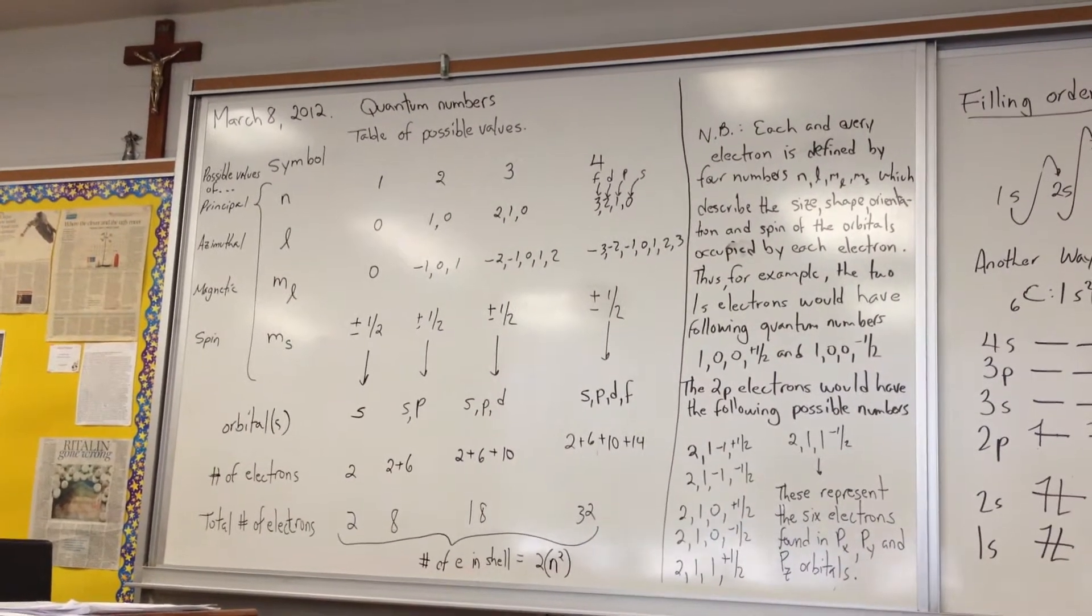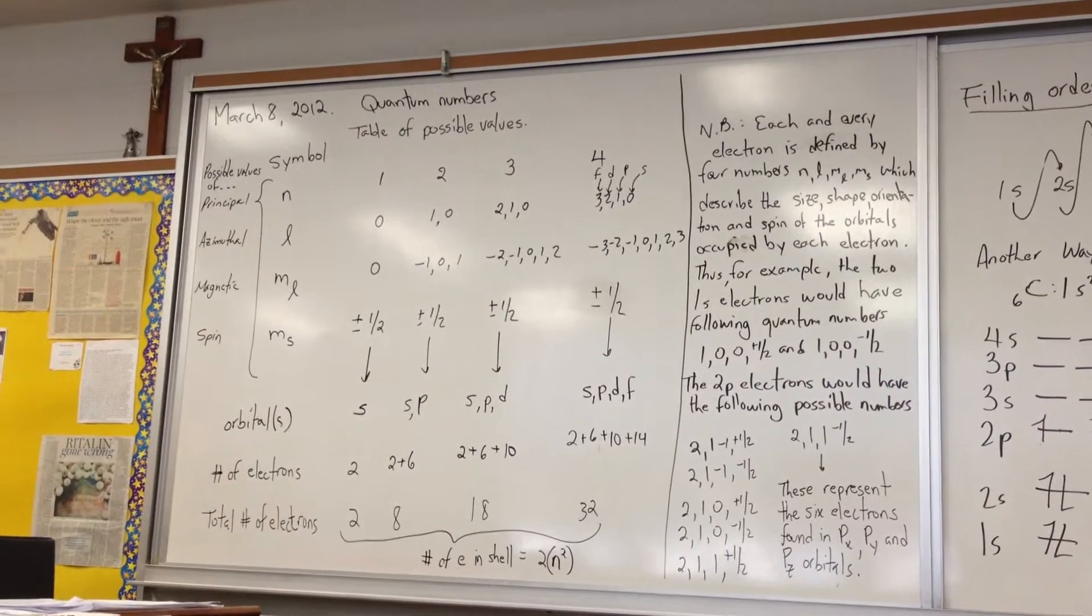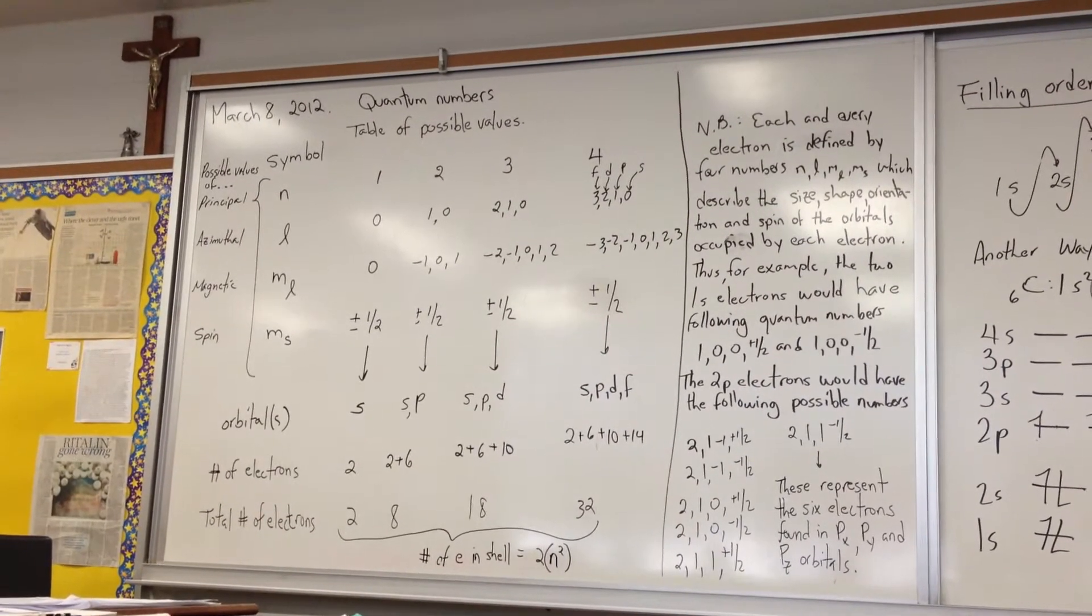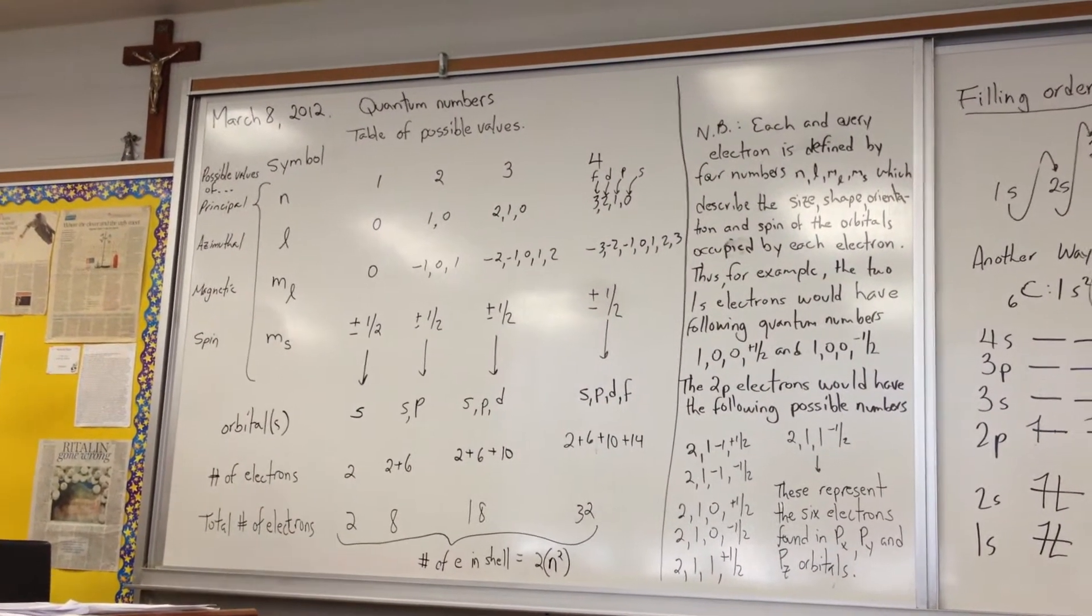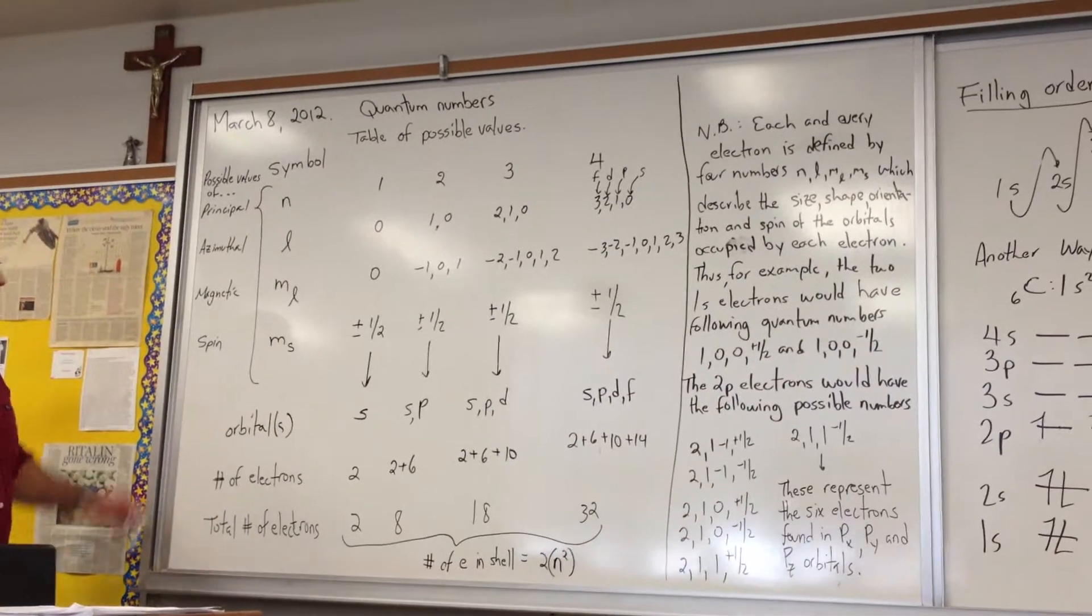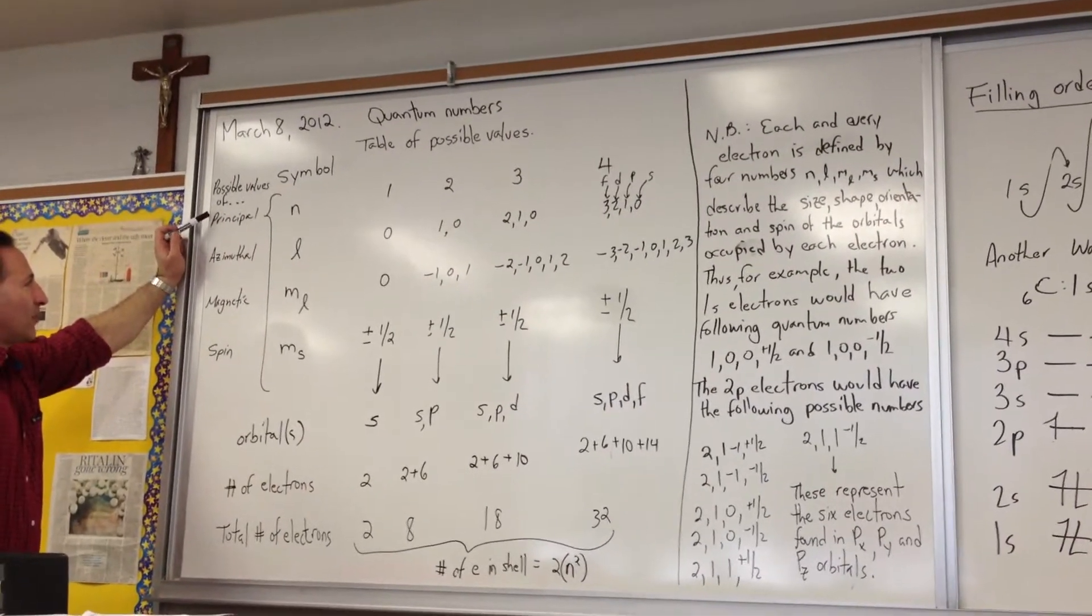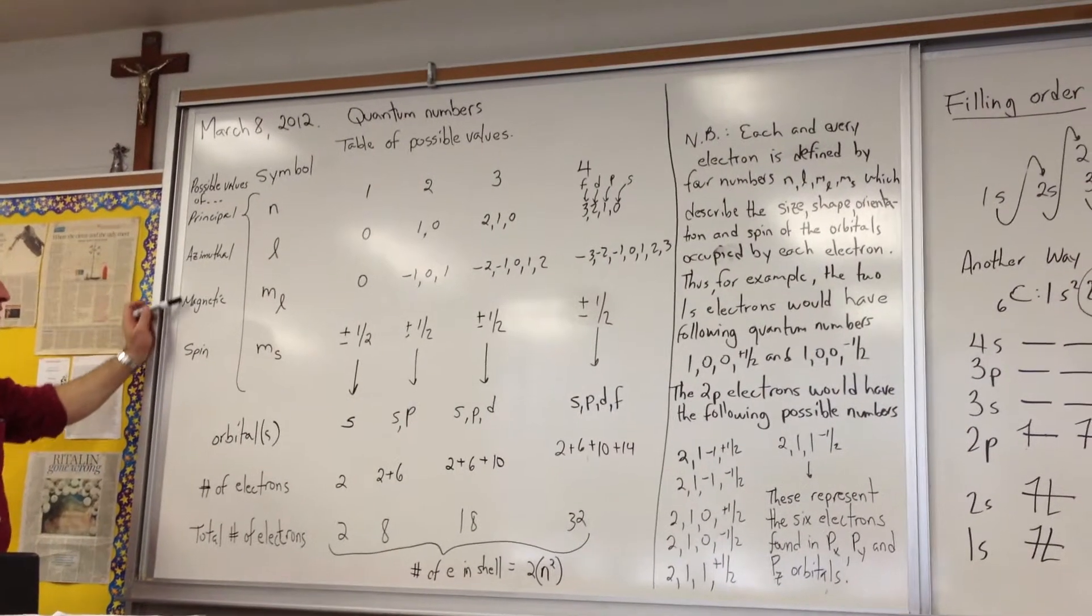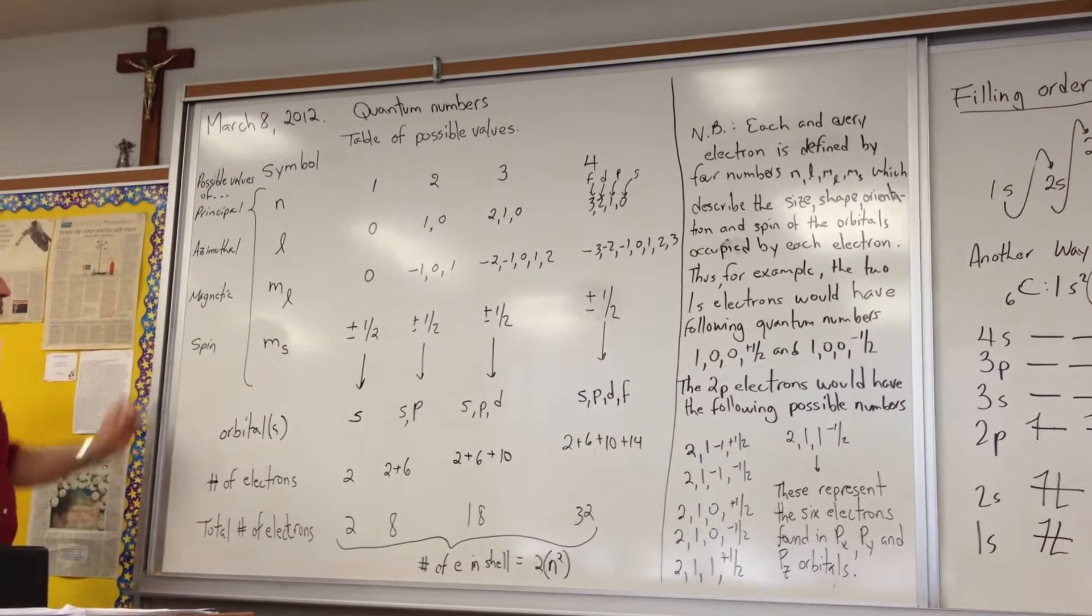All right, so today's talk is about quantum numbers and their significance. There are four possible quantum numbers, and they're called the principal, the azimuthal, the magnetic, and the spin quantum number.